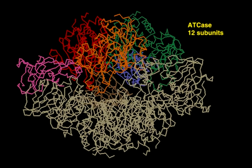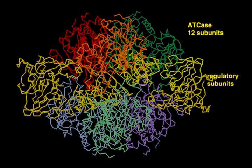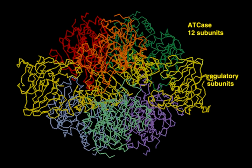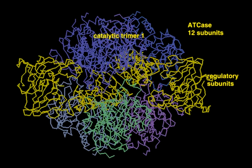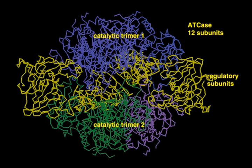This huge enzyme complex is composed of 12 subunits. Six are regulatory subunits that form a belt around the center of the complex. The remaining six subunits are arranged as two catalytic trimers, each positioned on one end of the enzyme.